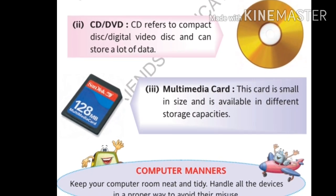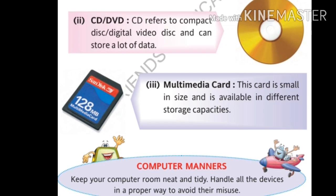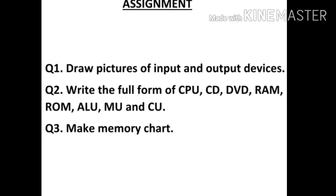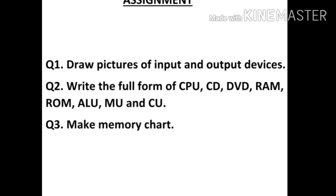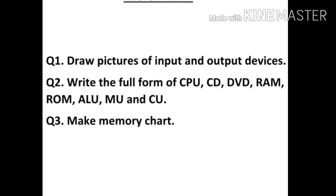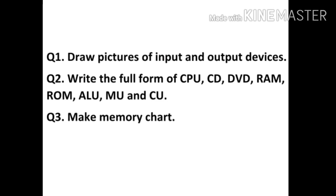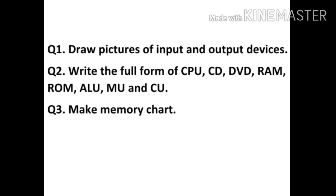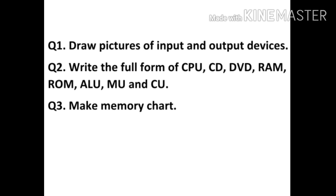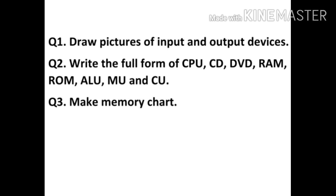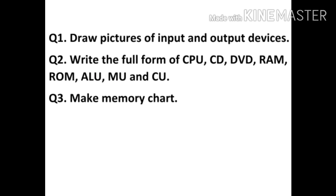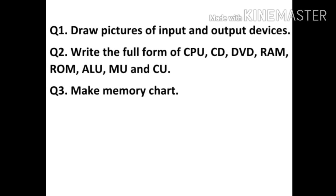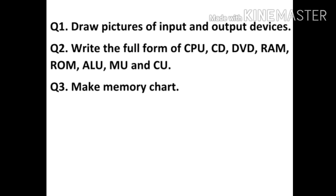Now there is an assignment for you. First, draw pictures of input and output devices. Next, write down the full forms of CPU, CD, DVD, RAM, ROM, ALU, MU, and CU — just find the full forms from the video and write them down. Next, make a memory chart. You have to do this assignment in a copy and learn it. We will continue the chapter in the next video. Thank you.